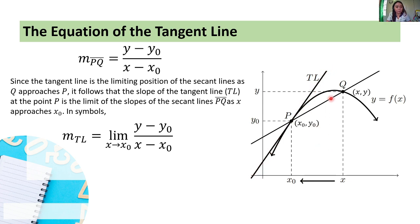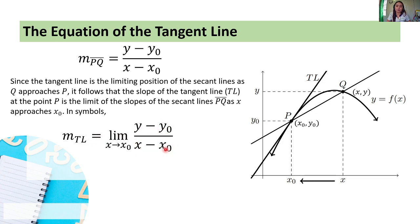Hence, the slope of the tangent line is equal to the limit of (y minus y₀) over (x minus x₀) as x approaches x₀.